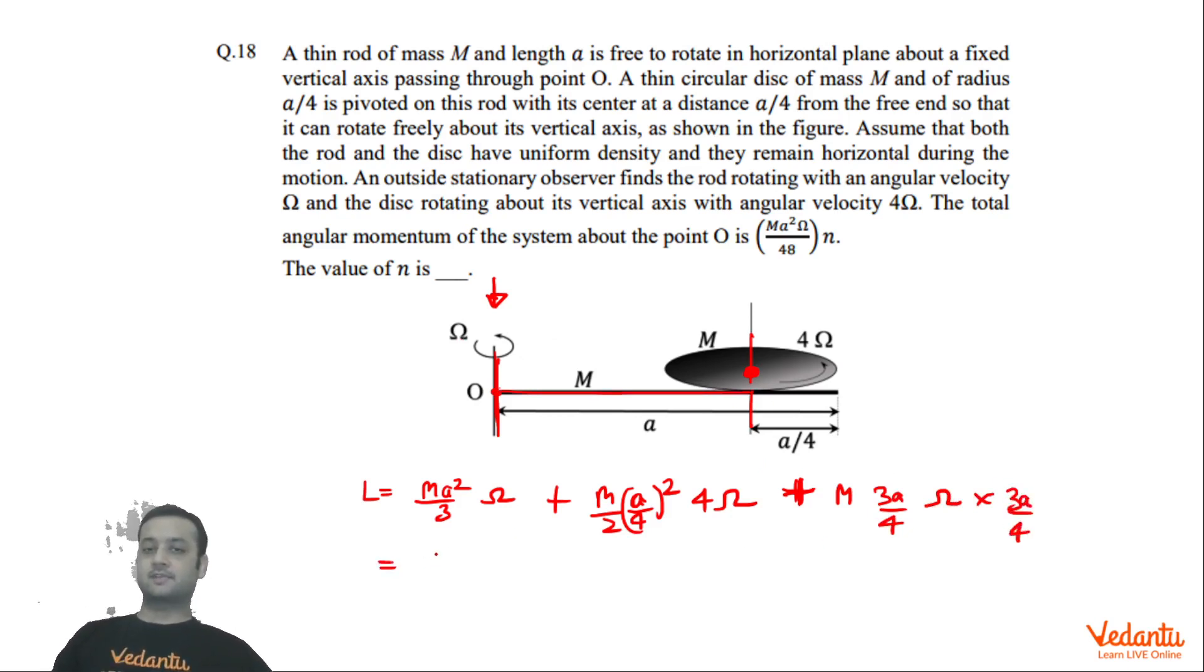We can add this up, so we can see that Ma²ω will come out to be constant here. 1/3 will remain here, we will get 1/16 × 4 is 1/4, plus 1/2 also there, so 1/8. Here we will get 39/16.